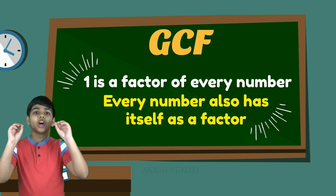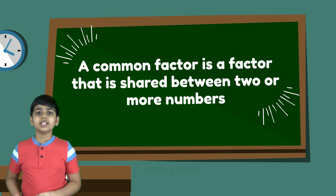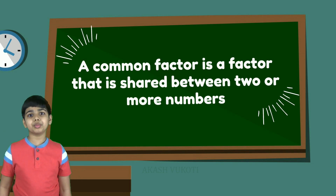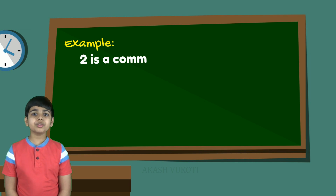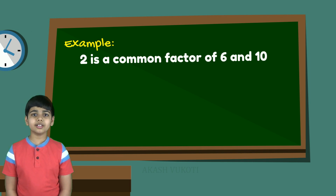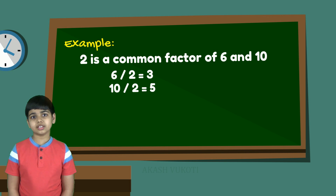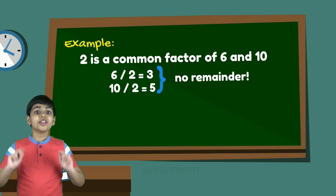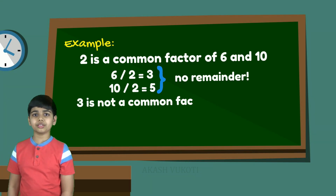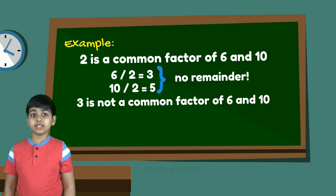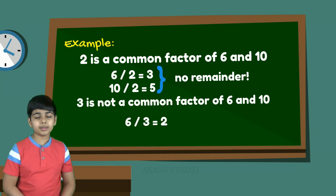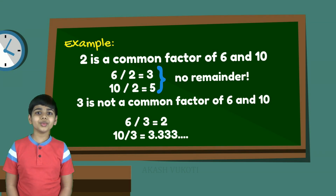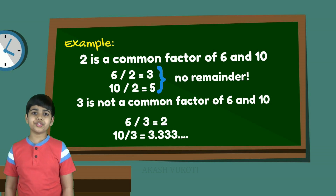Next, a common factor is a factor that is shared between two or more numbers. For example, 2 is a common factor of both 6 and 10 because when you divide 6 and 10 by 2, the result has no remainder. But 3 is not a common factor of 6 and 10 because although it divides 6 evenly without a remainder, it doesn't divide 10 evenly. So, 3 is not a common factor of 6 and 10.